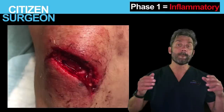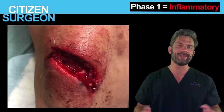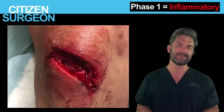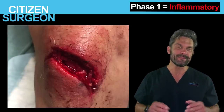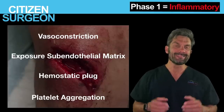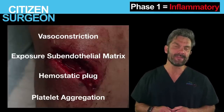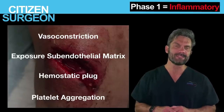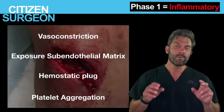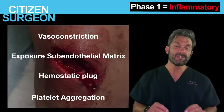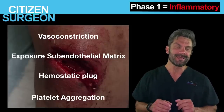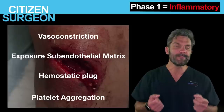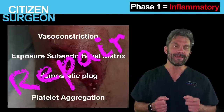Let's get into the inflammatory phase. Say you're on the trauma service and a patient comes in after a motor vehicle accident with a big laceration on his knee. What's happening within the wound? After the injury, first you get intense vasoconstriction. You get exposure of the subendothelial matrix, which causes platelet aggregation and formation of the platelet plug — that's your primary hemostasis. Primary hemostasis is the Kickstarter for wound healing.